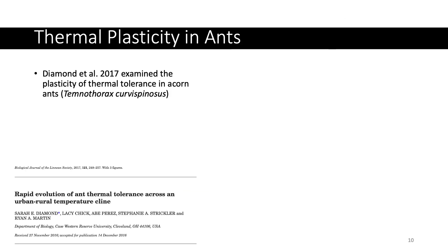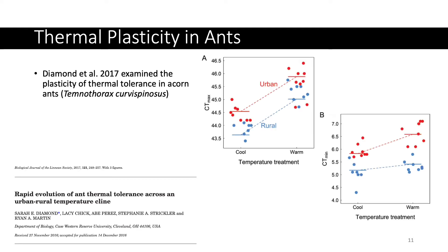That's not yet evidence that phenotypic plasticity or plastic reaction norms are evolving in human-disturbed environments. So now we'll talk about an example of thermoplasticity in acorn ants. Diamond et al. in 2017 discovered — and these figures are straight from their paper — that urban and rural environments differ in their critical thermal maximum, pictured on the y-axis of panel A, regardless of rearing temperature on the x-axis. Urban populations always show higher thermal tolerance.